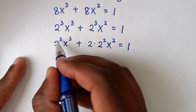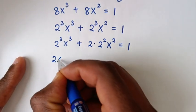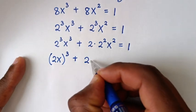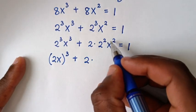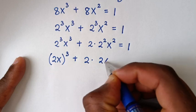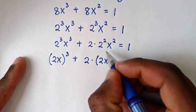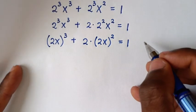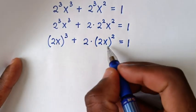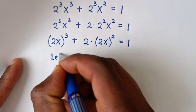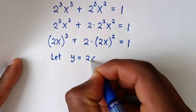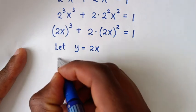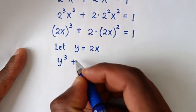From here, power 3 is common so it becomes (2x)³, and power 2 is common so it becomes (2x)². This gives (2x)³ + 2·(2x)² = 1. Since 2x is common, we let y = 2x.